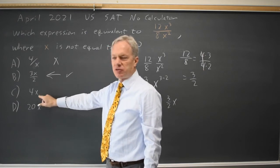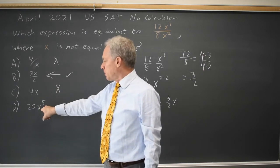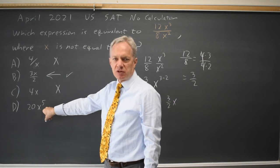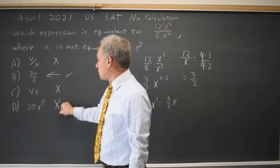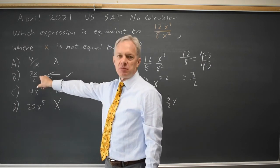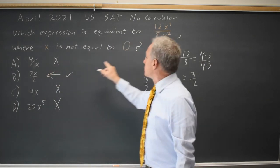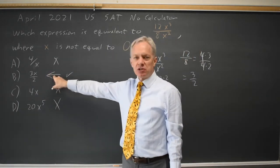4x is 4 times 1 is 4. That's not correct. 20x to the 5th is 20 times 1 to the 5th, which is 20 times 1 is 20. That's not 3 halves. The only answer that matches the original expression when x equals 1 is choice B.